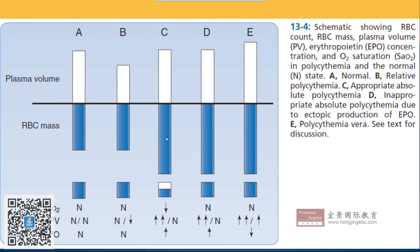In panel C, the plasma volume is unchanged, but total blood volume is increased, mainly because the red blood cell mass increases. This generally occurs with EPO use — for example, an athlete using EPO as a performance enhancer increases their RBC mass and oxygen-carrying capacity. In this case, the bone marrow's normal response to exogenous EPO increases RBC mass while plasma volume stays normal.